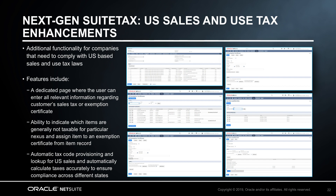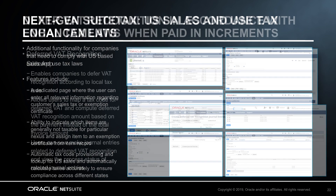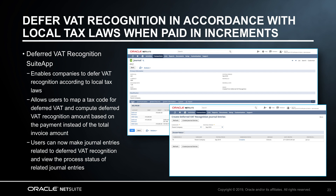SuiteTax has added additional functionality for companies that need to comply with U.S.-based tax laws specifically related to sales and use tax. Features include the ability to enter all relevant information regarding customer sales tax or exemption certificates on a dedicated page, the ability to indicate which items are generally not taxable for a particular nexus, and to assign the item to an exemption certificate from the item record, automatic tax code provisioning and lookup for U.S. sales, and automatically calculating taxes accurately to ensure compliance across different states. Release 19.1 also provides the Deferred VAT Recognition Suite app to enable companies to defer value-added tax recognition according to local tax laws, computing the deferred VAT recognition amount based on the payment instead of the total invoice amount.